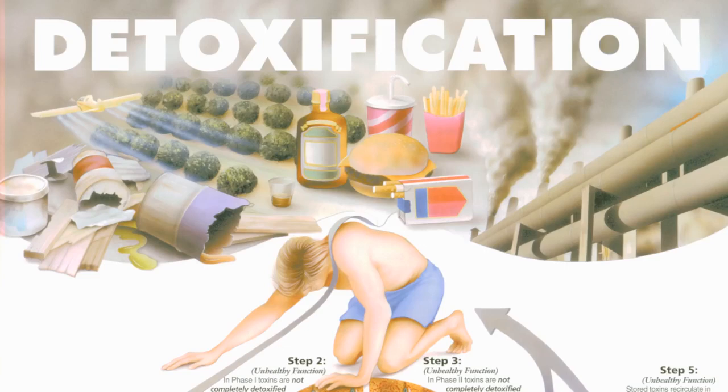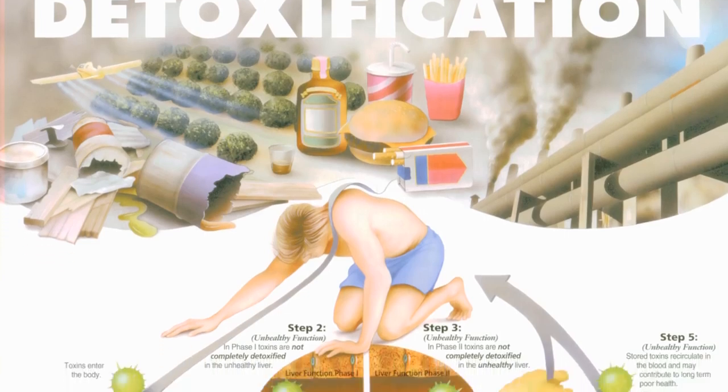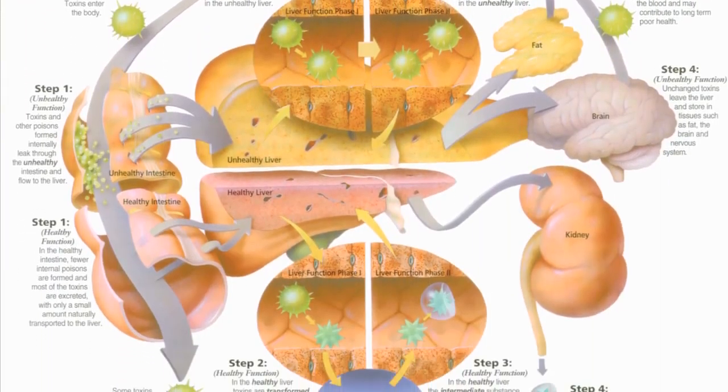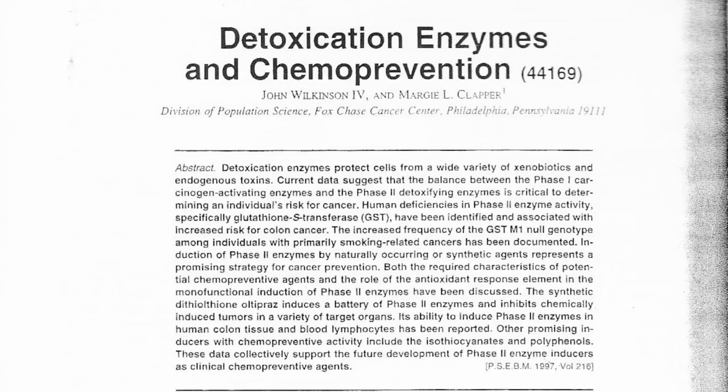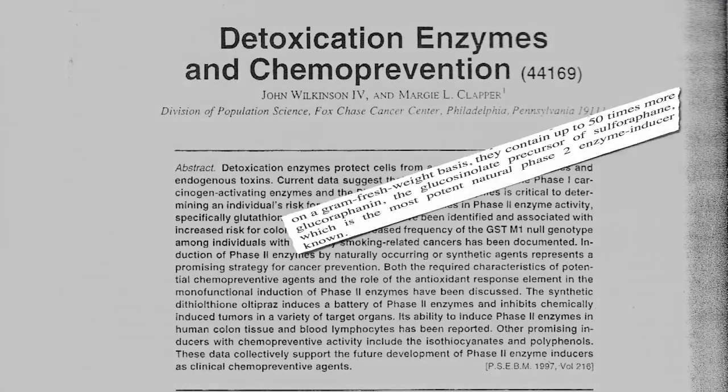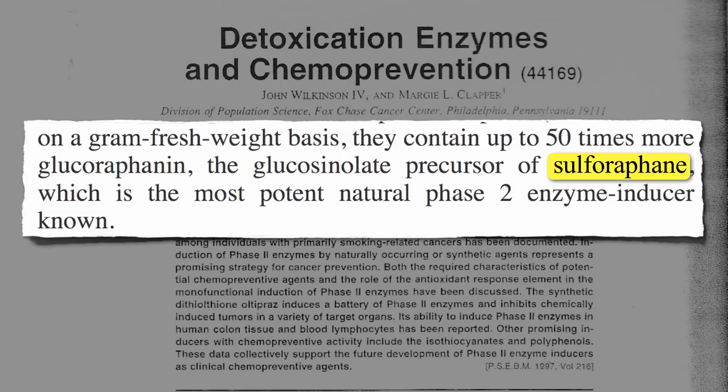There's lots of talk these days about detoxing, but talk is cheap. Our liver is actually doing it all day, every day, and if we want to detoxify, the best thing we can do is boost our liver's own detoxifying enzymes. And sulforaphane is the most potent natural phase II enzyme inducer known. It's one of our liver's detoxification systems. So where do we find this stuff?